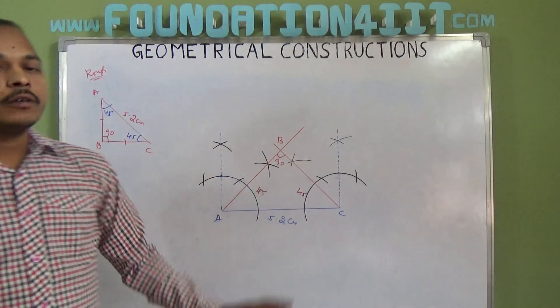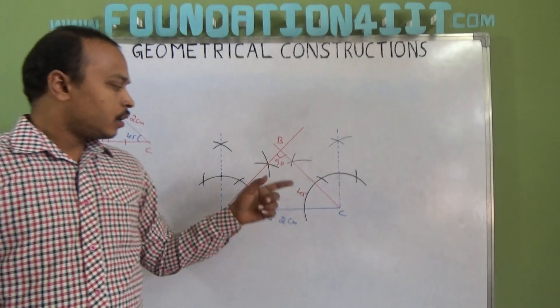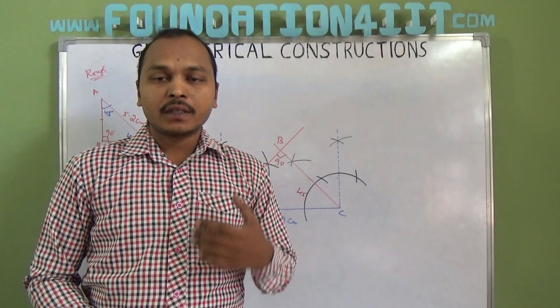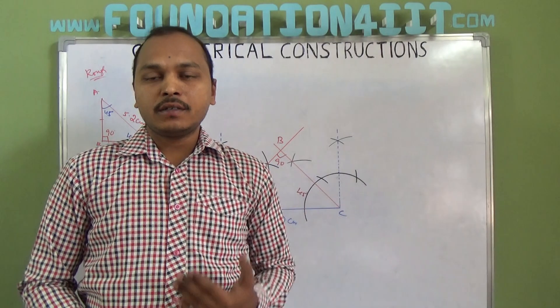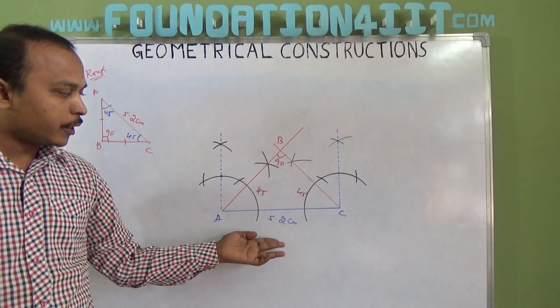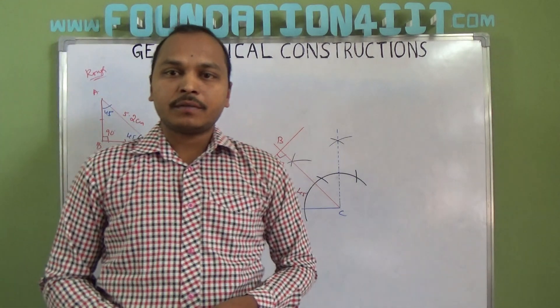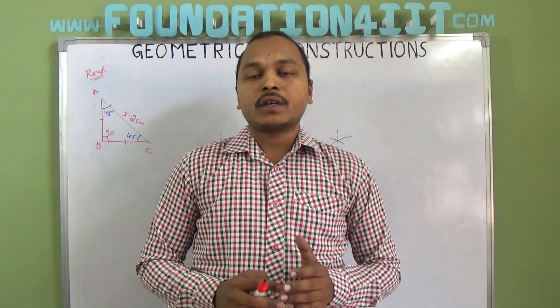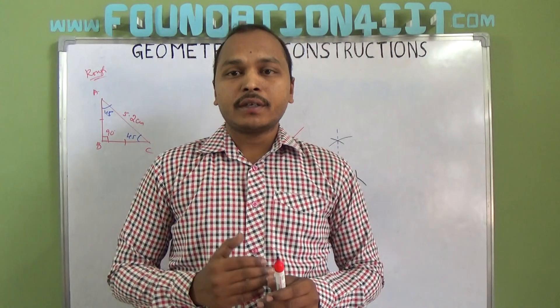So ABC is a right angle triangle and hypotenuse opposite to 90 degrees. The side which is opposite to 90 degree angle is hypotenuse. Hypotenuse is 5.2. Other two sides are equal. So this way we can construct isosceles right angle triangle when hypotenuse is given.